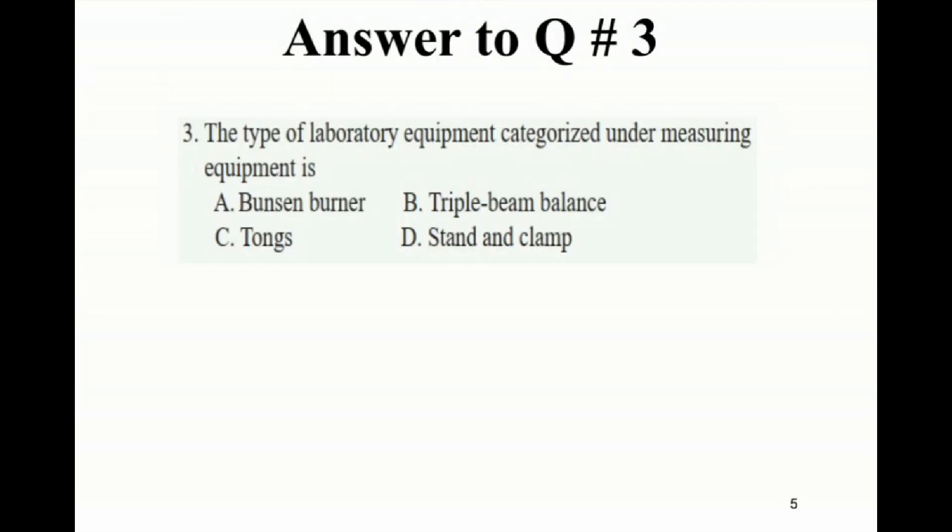Question 3: The type of laboratory equipment categorized under measuring equipment is: A: Bunsen burner, B: Triple-beam balance, C: Tongs, D: Stand and clamp.